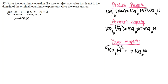Now looking at that, let's go ahead and condense our two logs. We can see that we have an addition symbol in between the two, which means we're using our product property.